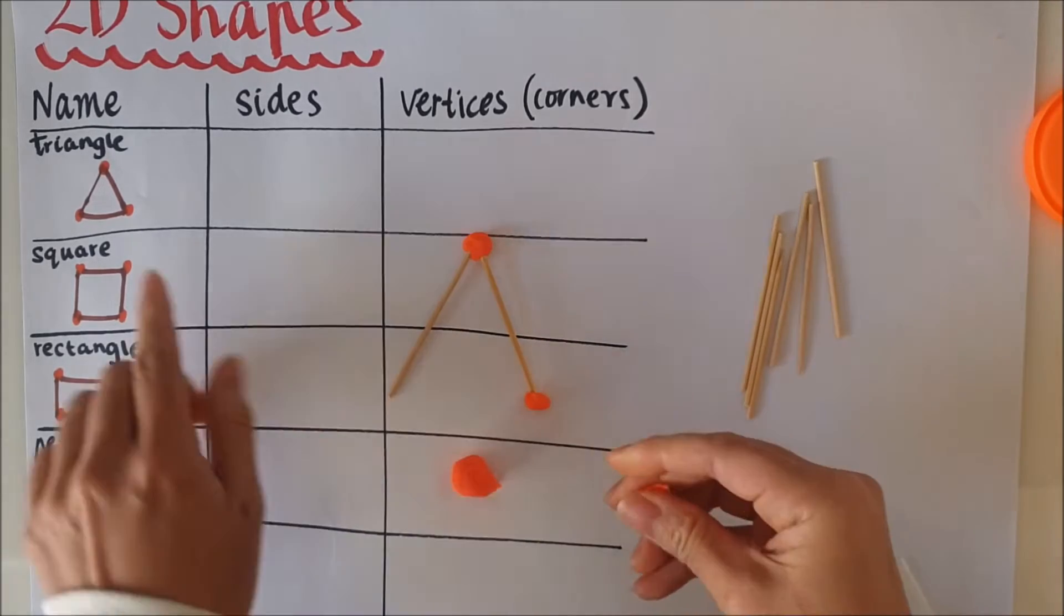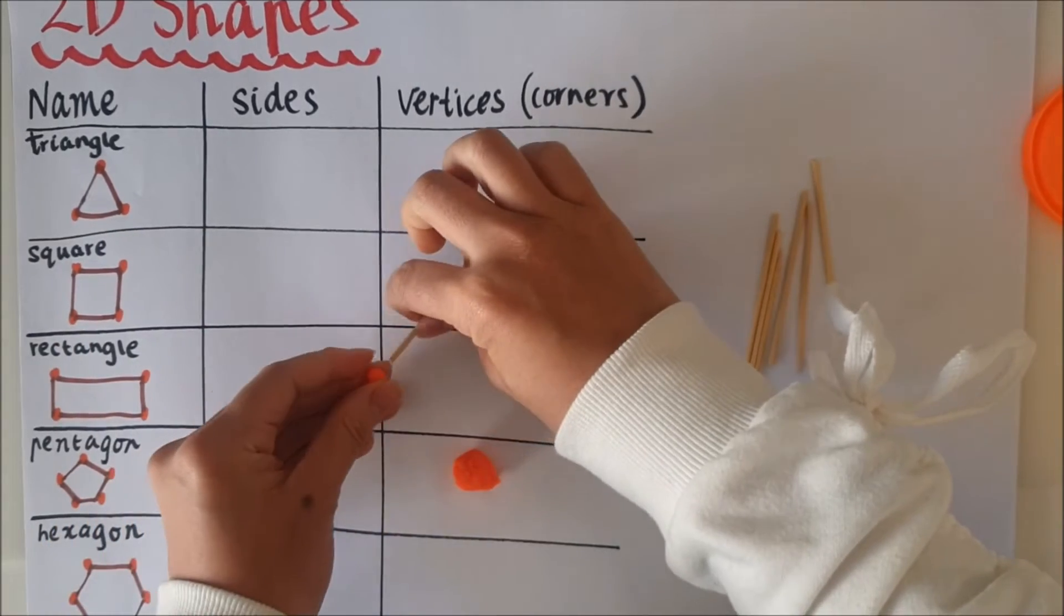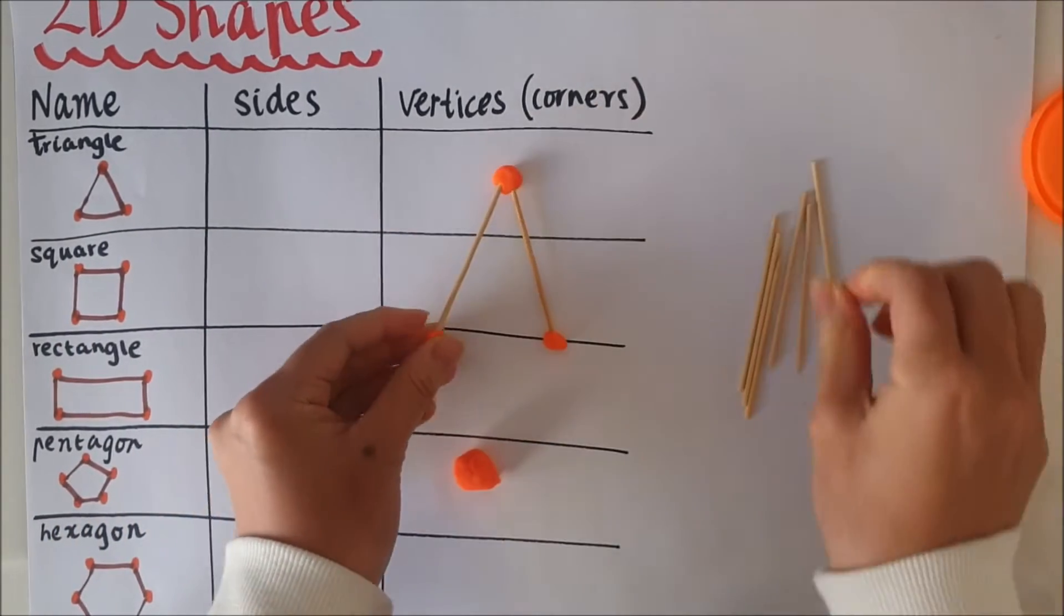So use two different colours. If you don't have play-doh and you can't make the model you can always just use different colours to draw.